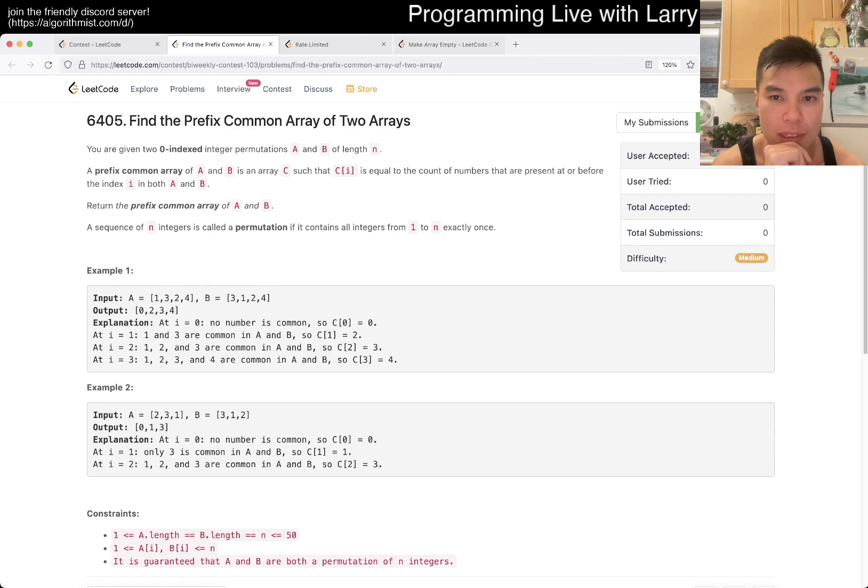The count of numbers that are present at or before the index. The count of numbers that are present at or before the index i in both. What does that even mean? I is equal to one. One and three. I don't even know how to read this. One and three. Oh, I'm looking at, I'm comparing this and this, that's why.